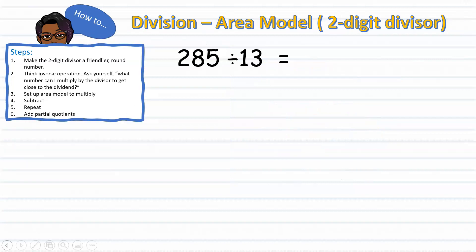To start, we have a three-digit number divided by a two-digit divisor. So, we're going to think of 13 in terms of a friendlier round number. 10 being the closest round number. We will then think to ourselves, what number times 10 gets me close to 285?